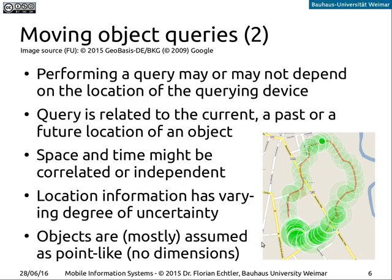To summarize, this kind of query may or may not depend on the location of the device or user making the query. It can be related to any point in the history or future of the object. Space and time can either be correlated or independent - for example, the airplane query is space-and-time correlated, while the 'get me to my hotel' query is independent.